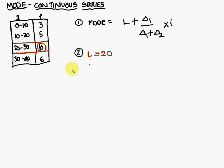Now consider the corresponding row. L, the lower interval, is 20. Next, we need I. I is the class interval width, the difference in the range 20 to 30, so I = 10.